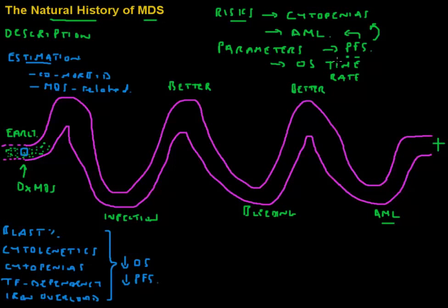But each one of them may contribute to a risk for progression, or a risk of not living as long as their normal counterparts, in a different way. Some factors, a high blast percentage, may count much more than a patient who only has anemia. And in a similar way, each of these is weighted differently.